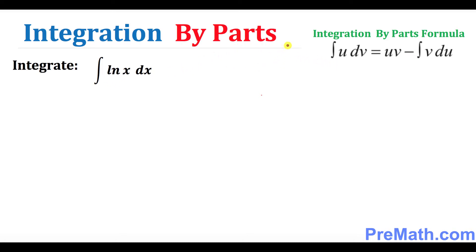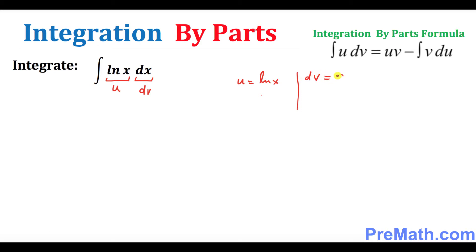So what is the formula u dv? Here I'm going to put down natural log of x as u, and dx I'm going to put down as dv. That means our u is going to be natural log of x and our dv is going to be simply dx.